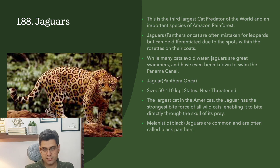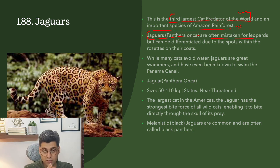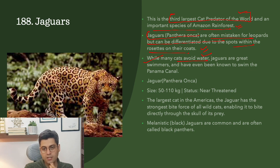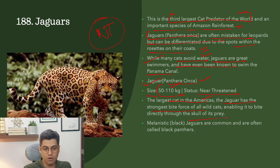The next topic is Jaguars, in news as the third largest cat predator in the world and an important species of the Amazon rainforest. Jaguars, Panthera onca, are often mistaken for leopards but can be differentiated by the spots within the rosettes on their coats. While many cats avoid water, jaguars are great swimmers and have been known to swim the Panama Canal. Weight is 50 to 110 kg, status is near-threatened. The jaguar is the largest cat in the Americas and has the strongest bite force of all wildcats, enabling it to bite directly through the skull of its prey.